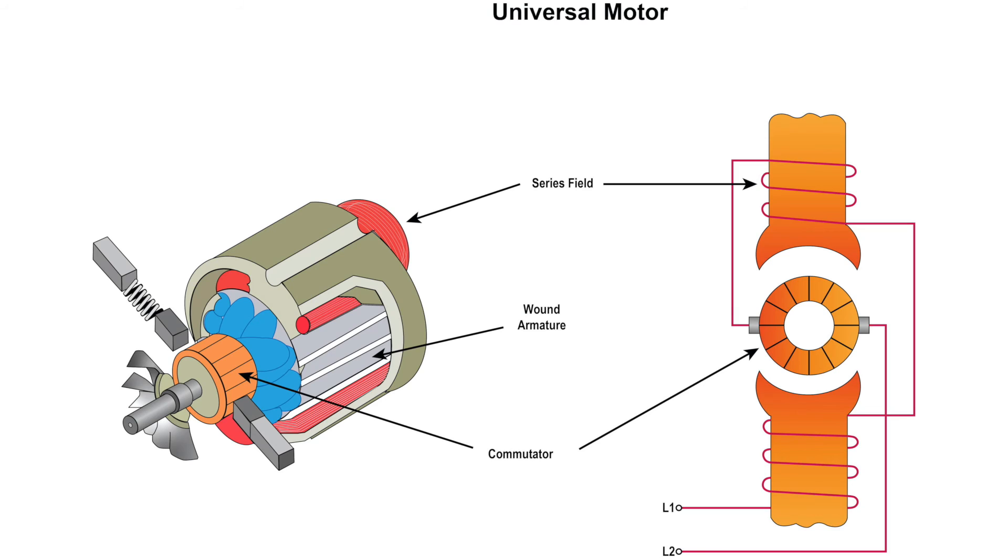Both the speed and direction of rotation of a universal motor can be controlled. Reversing the direction can be accomplished by reversing the current flow through the armature with respect to the series field. Varying the voltage that is applied to the motor controls the speed of the motor.